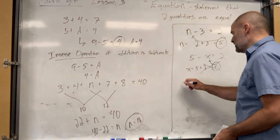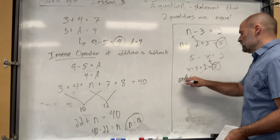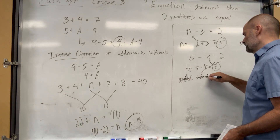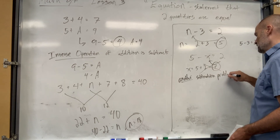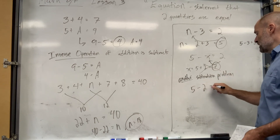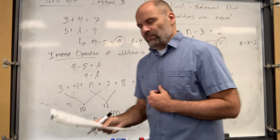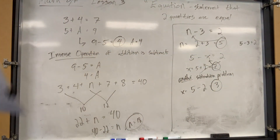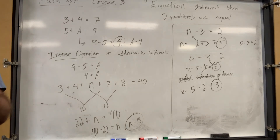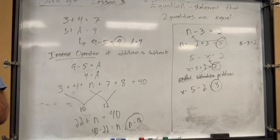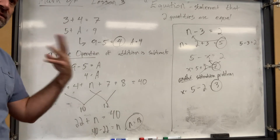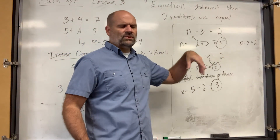So you can always throw an easy problem on the board and use that for reference. Or you could just try both, plug them in, and see which one works. This one is another subtraction problem: 5 minus 2 equals 3 — that's how you get to x. This is one of those things that's hard to remember, but honestly you don't have to remember it because you can just try both and see which one works. Use your gut, and after a while it's going to come naturally — muscle memory.